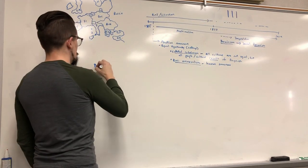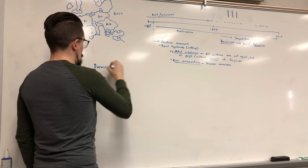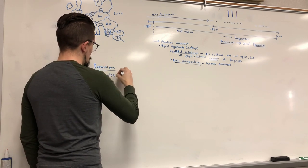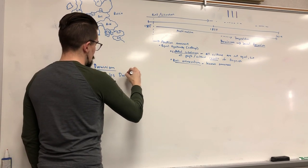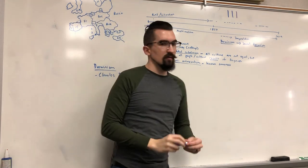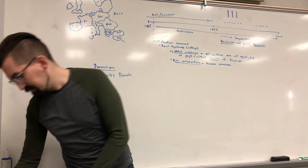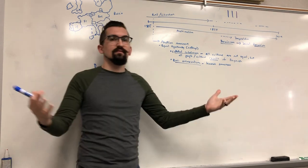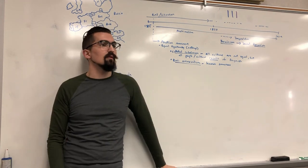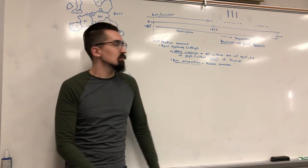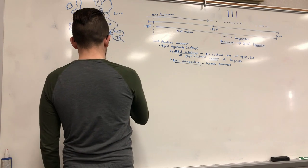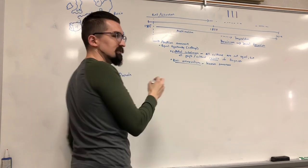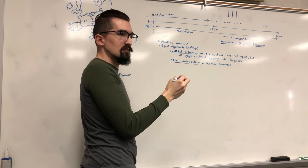Charles Darwin is the inventor of Darwinism. His book was The Origin of Species — that was 1859. It explained that evolution occurred because of natural selection — survival of the fittest — where the stronger genes get passed on from generation to generation.